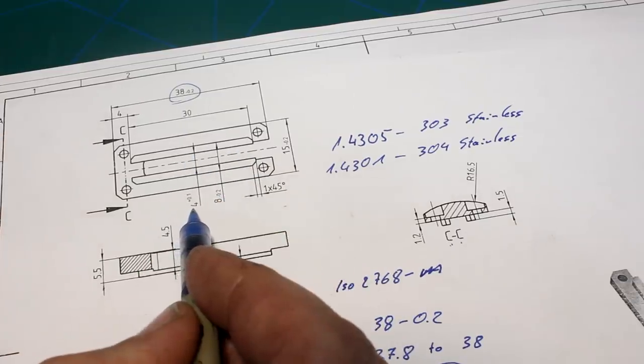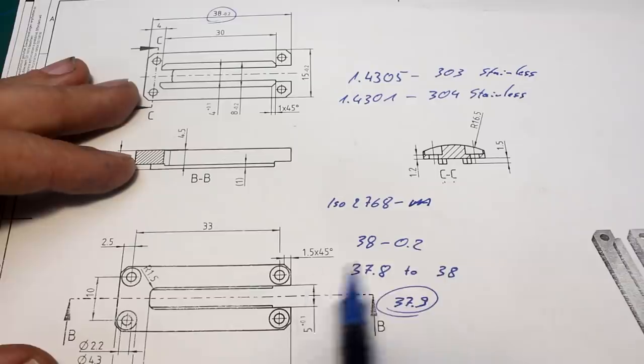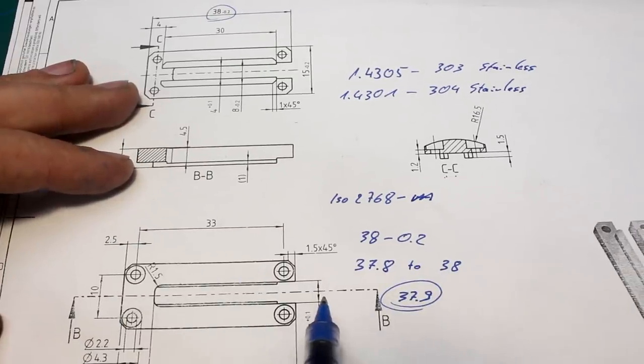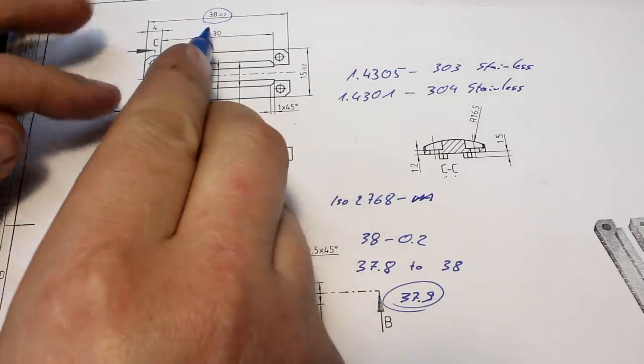So they go on the safe side, they put a plus tolerance on it, and the matching part probably has a minus tolerance. But overall, nothing crazy. Everything is well within 0.1mm tolerance overall. This would be a function-related dimensioning.